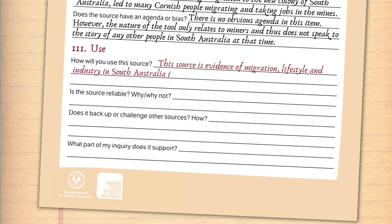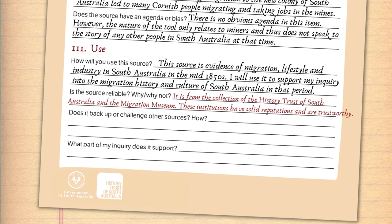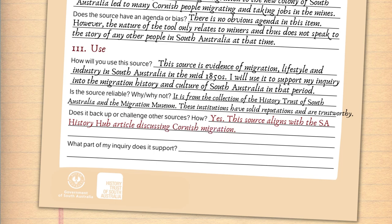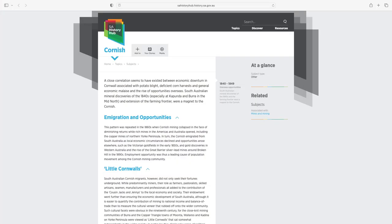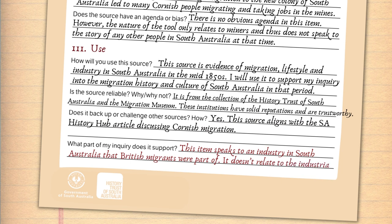Now let's look at the use of this source. How will you use this source? This source is evidence of migration, lifestyle, and industry in South Australia in the 1850s. I'm going to use it to support my inquiry into the migration history and culture of South Australia in that period. Is the source reliable? The source is part of the collection of the History Trust of South Australia and the Migration Museum. These institutions both have solid reputations and are trustworthy. Does it back up or challenge other sources? Yes, this source aligns with the SA History Hub article discussing Cornish migration. What part of my inquiry does it support? This item speaks to an industry in South Australia that British migrants were part of. It doesn't in itself relate to the Industrial Revolution or the culture of South Australia, so more research will be needed in those areas.